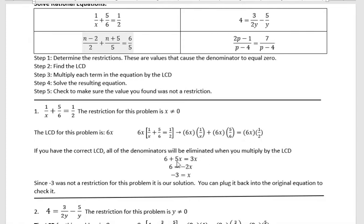Solving that equation by subtracting 5x from both sides and dividing by negative 2 gives us x equals negative 3. Since negative 3 was not a restriction, it is a solution to this problem, and you can always plug it back into your original equation to check.